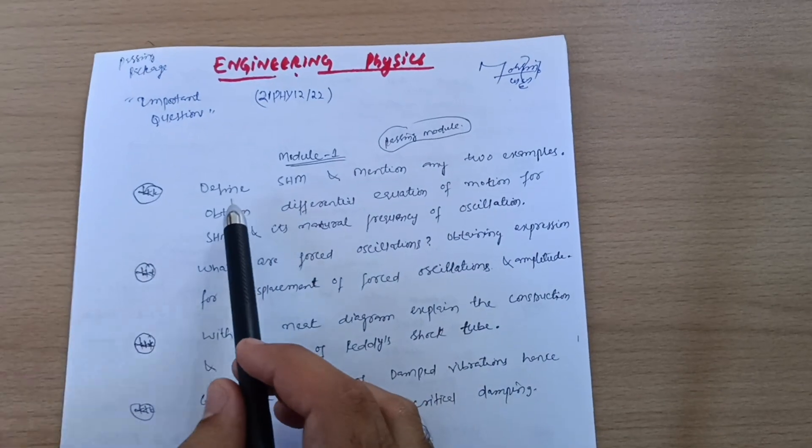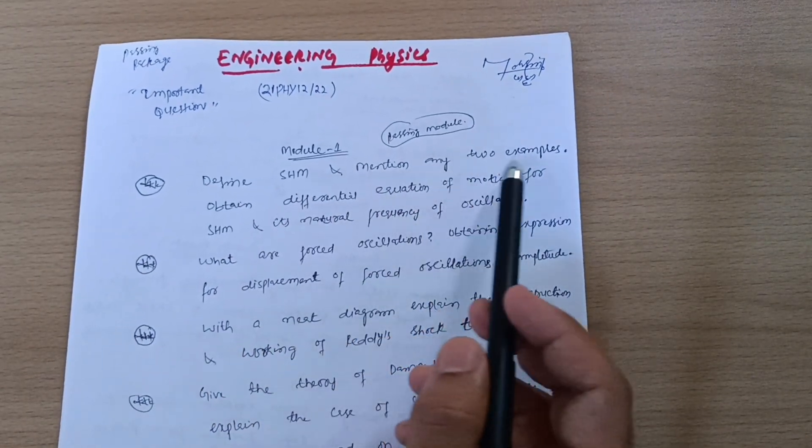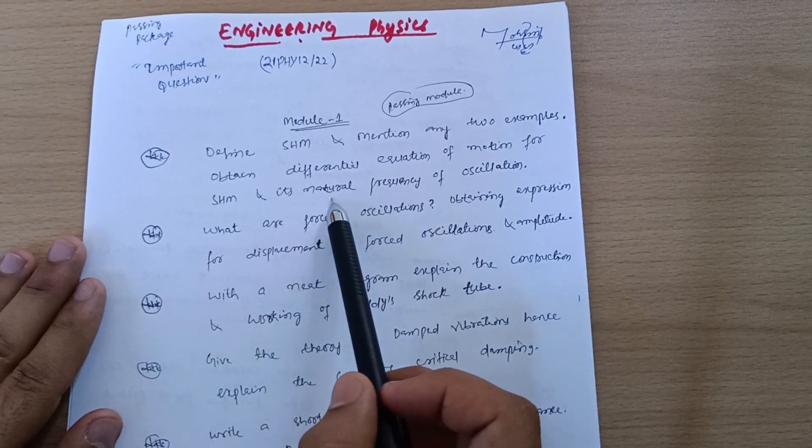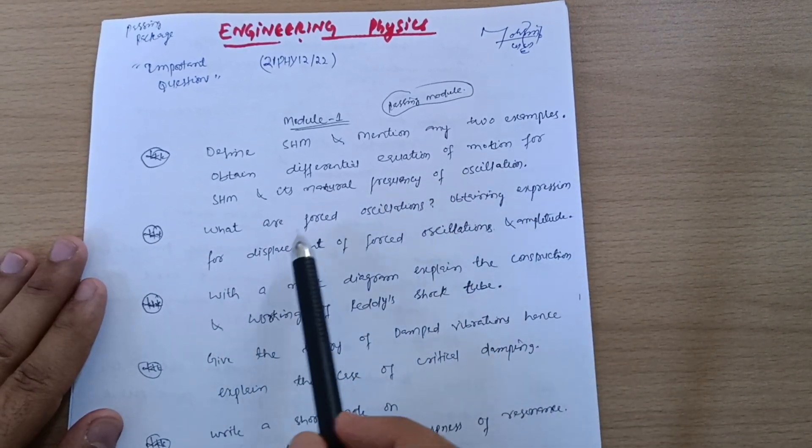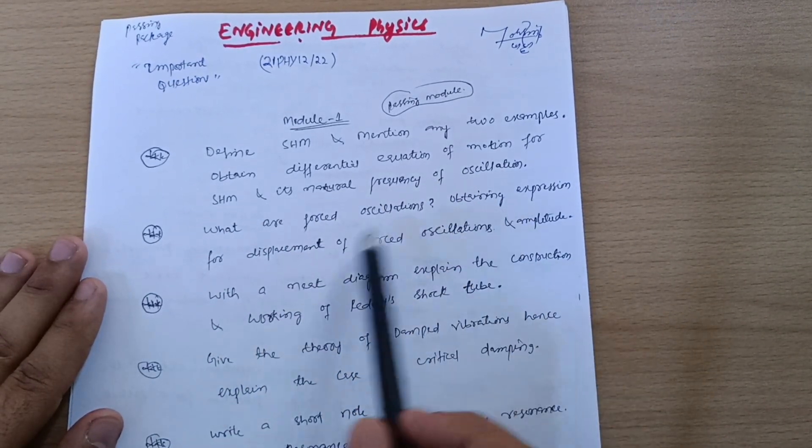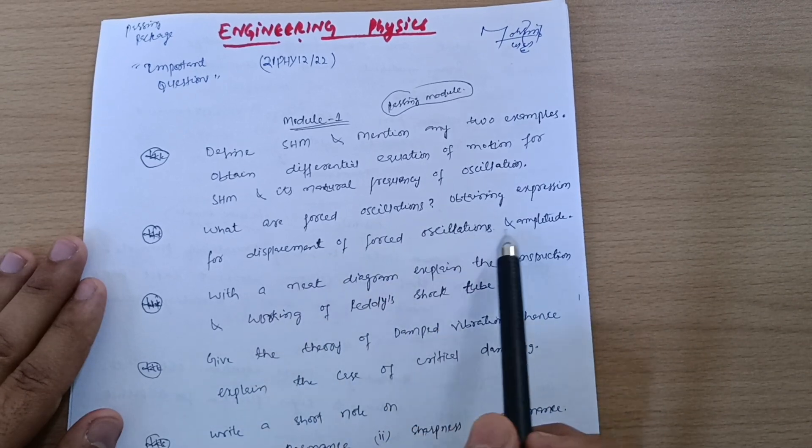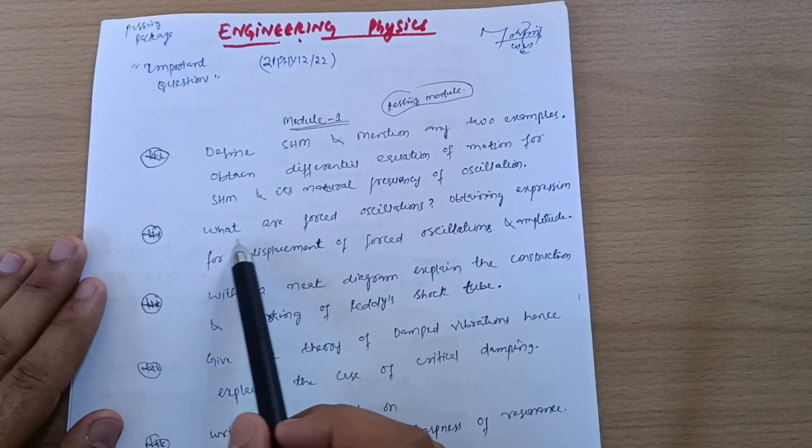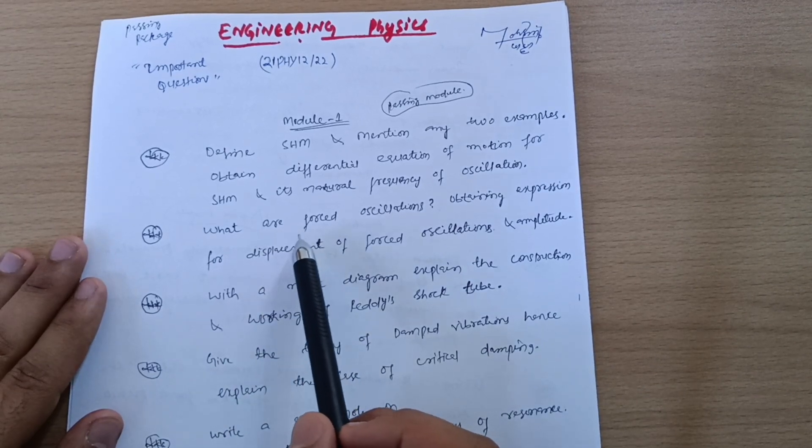Define simple harmonic motion and mention any two examples. Obtain differential equation of motion for SHM and its natural frequency of oscillation. What are forced oscillations? Obtain expression for displacement of forced oscillations, amplitude, and also for this derivation.